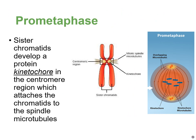In pro-metaphase, the steps from prophase continue. The nuclear envelope continues to break down until it's completely gone. The mitotic spindles continue to lengthen and move toward the chromosomes. Kinetochores form on top of the centromere structures, and the mitotic spindle microtubules coming out from the centrosomes attach to the kinetochores.